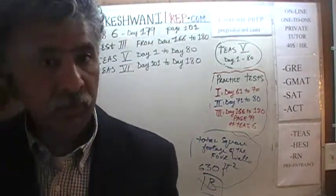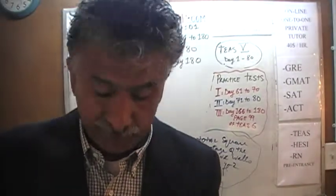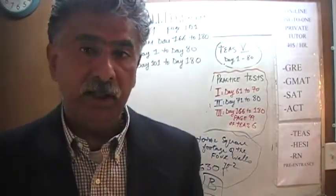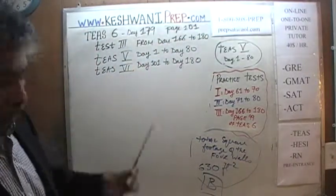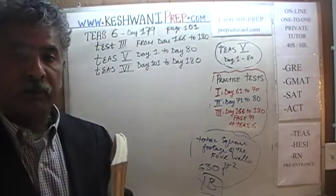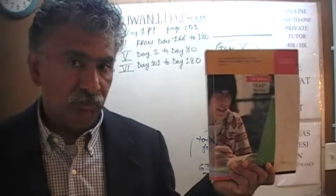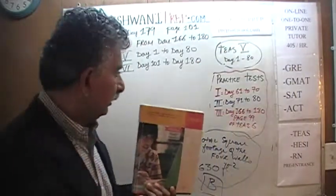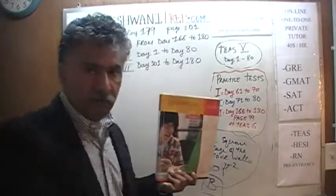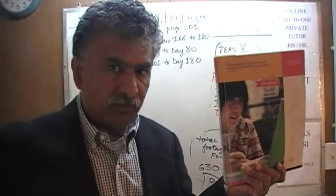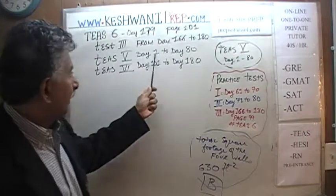We have been solving problems from the quiz that began on page 99, and it is that quiz we have been referring to as test 3. If you are interested in the first two exams, you will find solutions to test 1 from day 61 through 70, and test 2 from day 71 through 80. We have solved every single math problem from the 5th edition, from day 1 through 80.